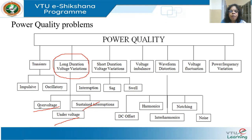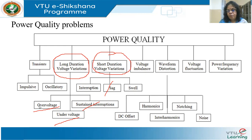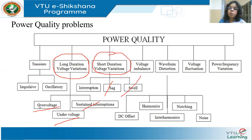Next, we have short duration voltage variations. I have what is called a sag — sag means less, coming down — similar to under voltage. Then swell, which means an increase, similar to over voltage. And interruption, whose meaning we already know.